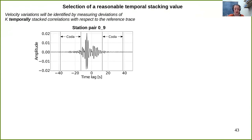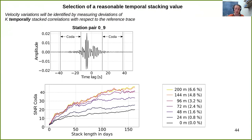A reasonable temporal stacking value has to be identified prior to the actual measurement of velocity variations. The velocity variations will be identified by measuring deviations of k-temporally stacked correlations with respect to the reference trace, where k is the stack length in time. Here we see an example correlation with coda windows marked for both positive and negative lag times. The signal-to-noise ratio is plotted versus stack length in days for different spatial stacking distances — 0 meters (no spatial stacking), 24 meters (0.8% of wavelength), up to 200 meters (6.6% of wavelength). Correlation coefficients between approximately 0.85 and 1 are obtained between the stacks and original waveforms. For all cases, the signal-to-noise ratio improves with greater temporal stack length, and this effect is more pronounced the more traces were previously spatially stacked.